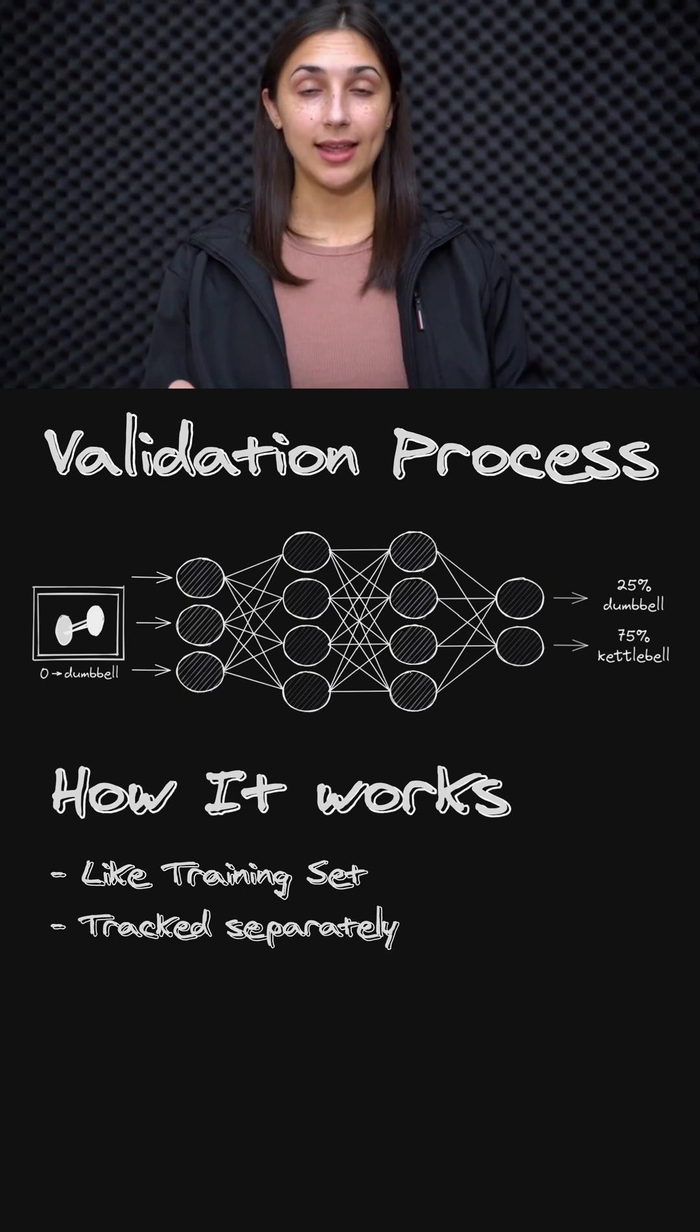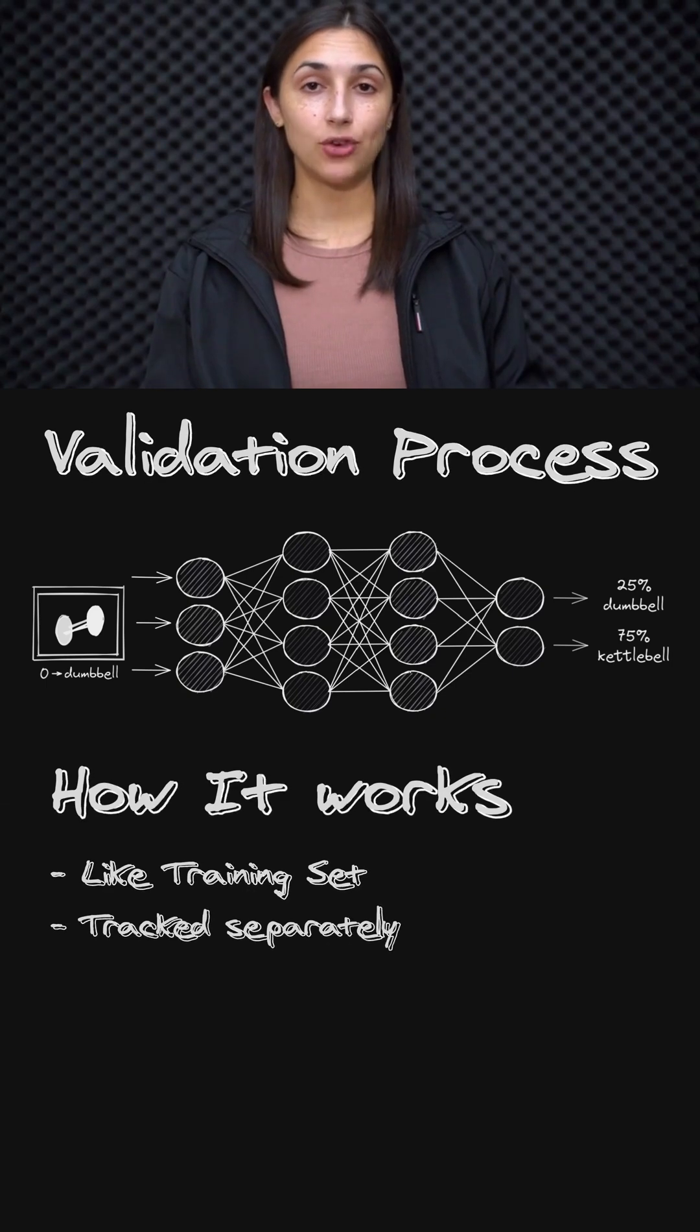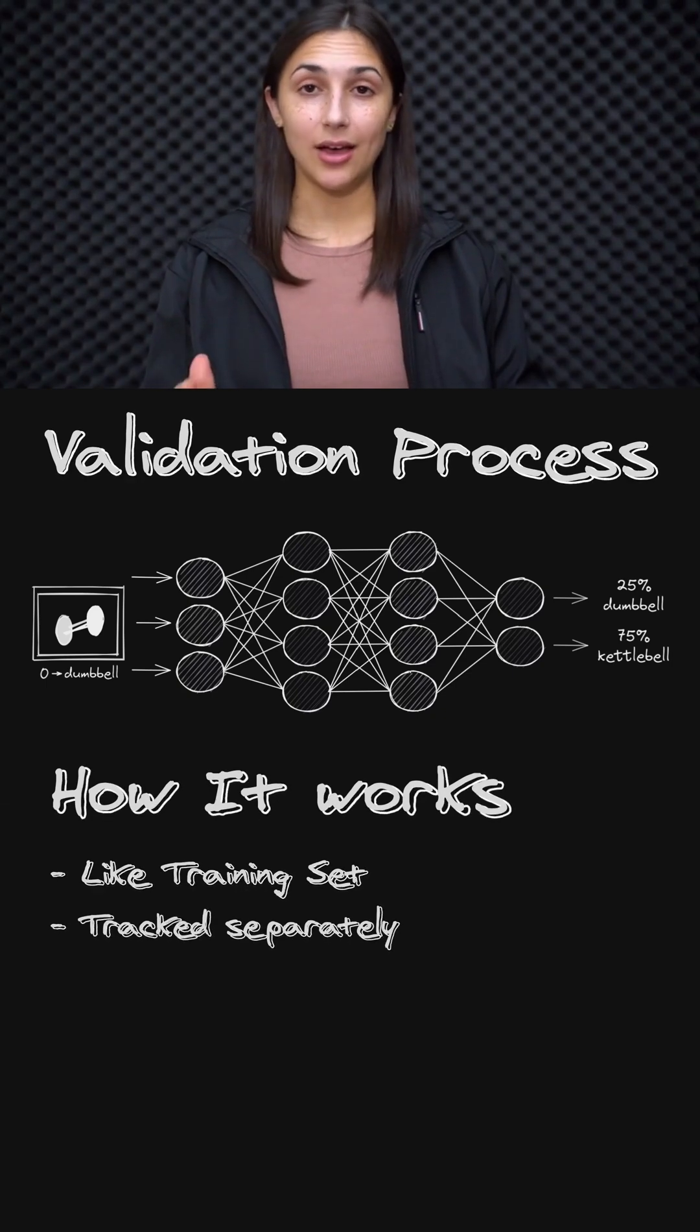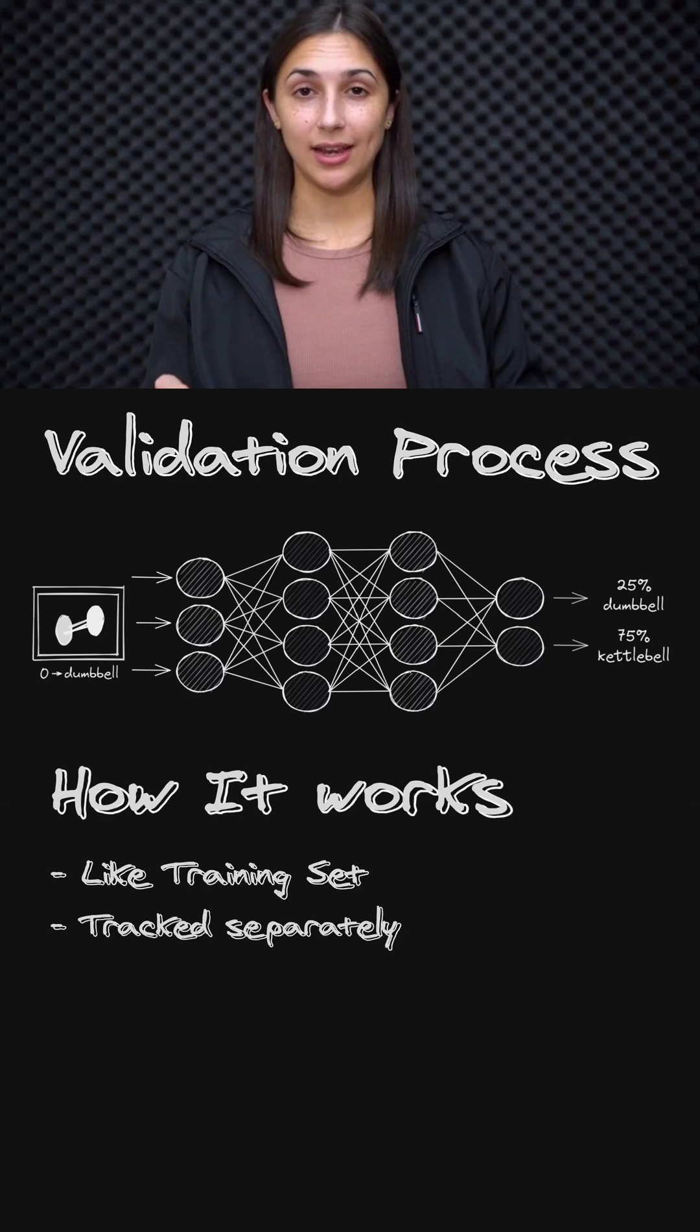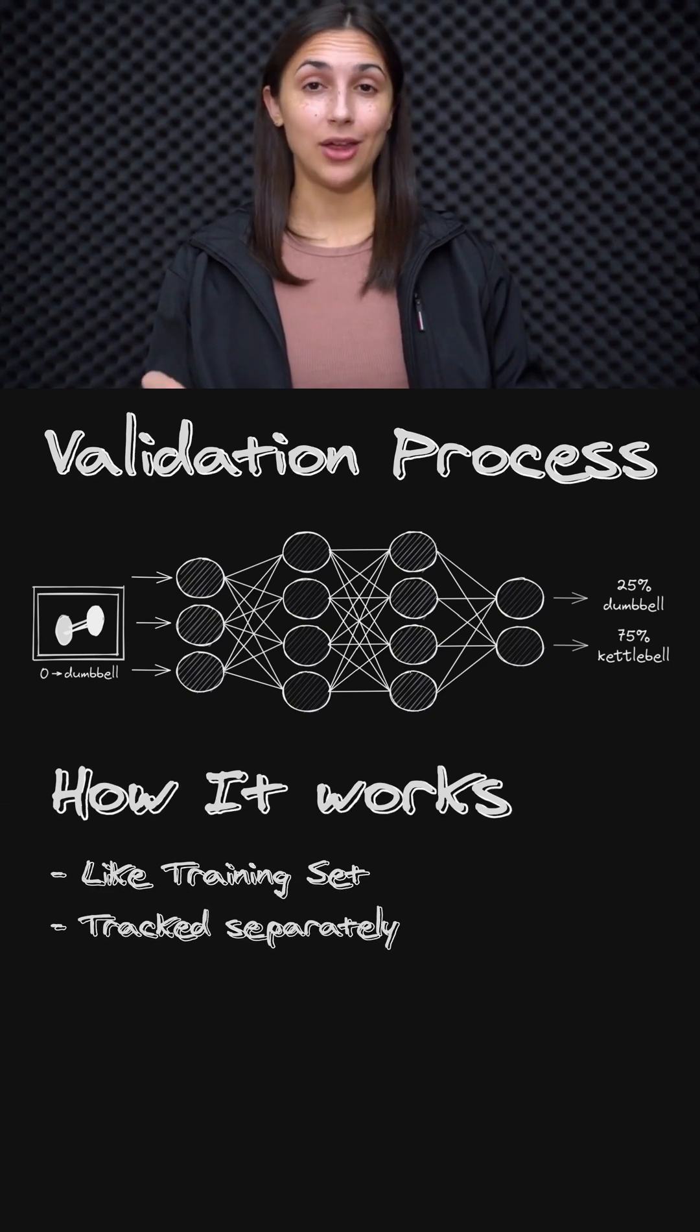And as we know, the data in the validation set is different from the data that's in the training set. So that's how we're able to get this unbiased evaluation for how well the model is generalizing, because we can see how well the model is providing classifications on our validation data, which is data that is not contained in the training set. So it's data that the model is not seeing during this training process.